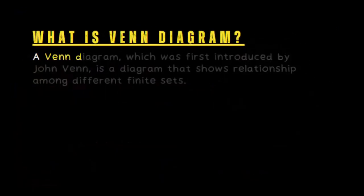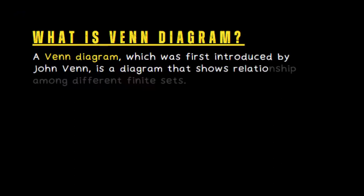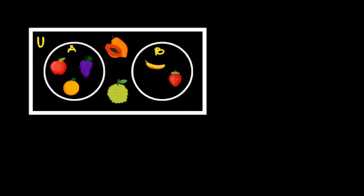But really, what is the Venn Diagram? A Venn Diagram which was first introduced by John Venn is a diagram that shows relationship among different finite sets. So let's have a given diagram here.